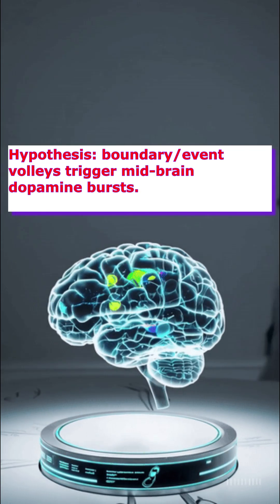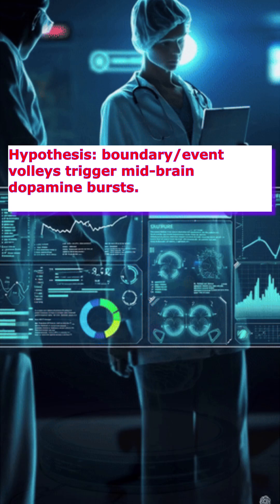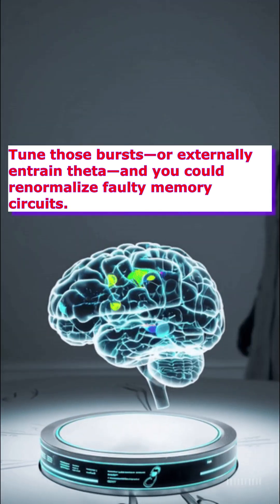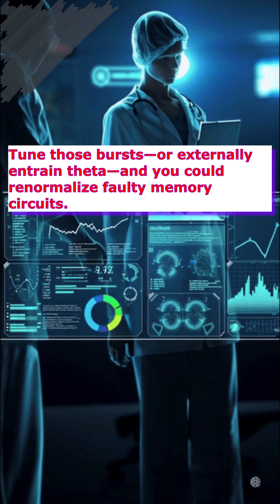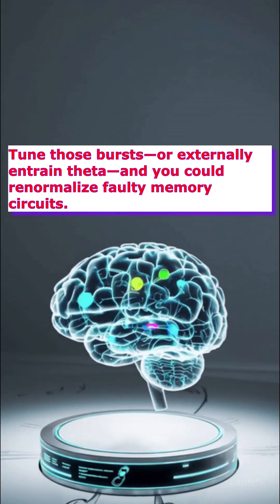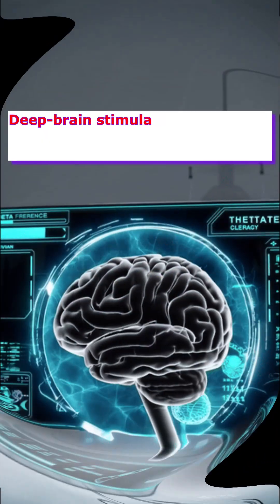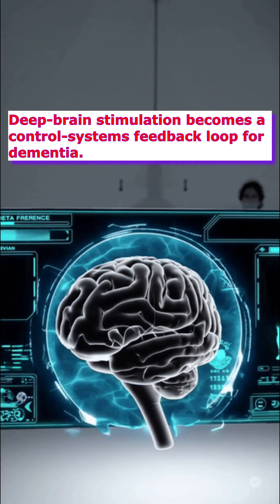Hypothesis: boundary event volumes trigger midbrain dopamine bursts. Tune those bursts, or externally entrain theta, and you could renormalize faulty memory circuits. Deep brain stimulation becomes a control system's feedback loop for dementia.